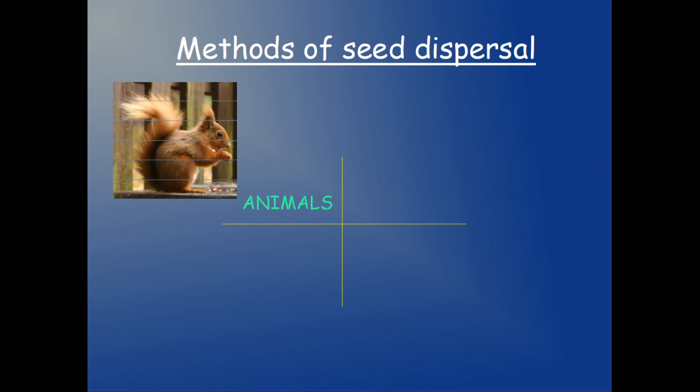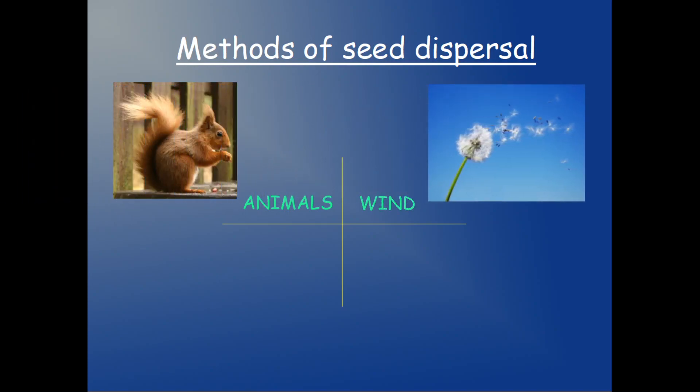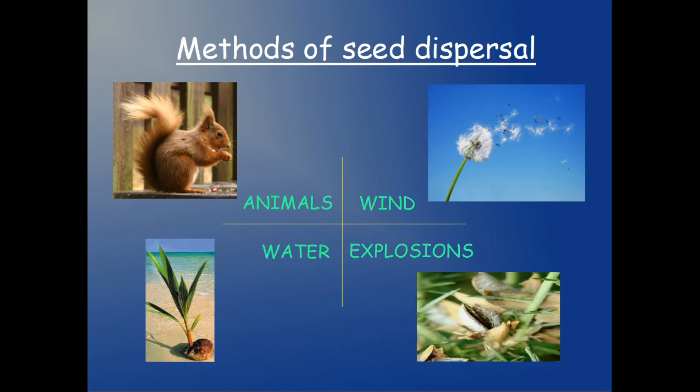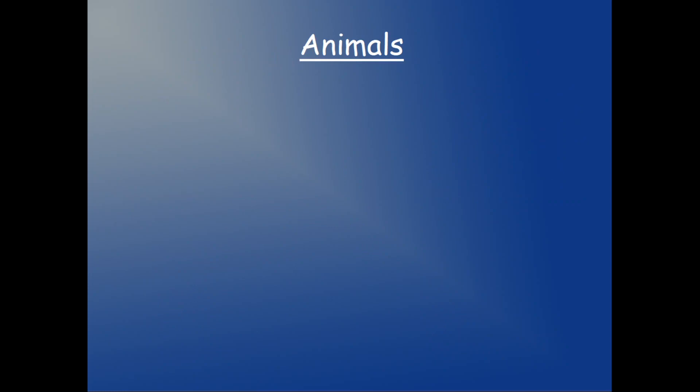Well, the first method is animals. Yep, plants use animals in order to spread the seeds. Another one: wind. This is much easier. The next one is water. This is very interesting. And finally, my favorite: it's through explosions. Yep, plants explode. What? Well, let's start talking about animals.